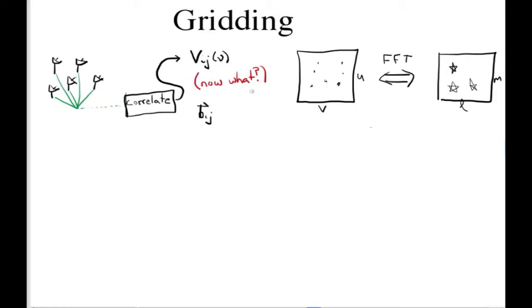And measure it in wavelengths relative to some source direction, which will be our phase center, to get UV and W coordinates. Now the first thing we're going to want to do is to get rid of this W component because we have fundamentally a two-dimensional plane that we want to put these samples into, and we want to do a two-dimensional Fourier transform to get to this picture of the sky.